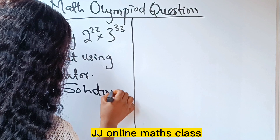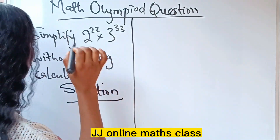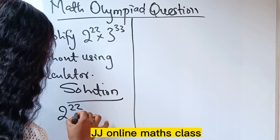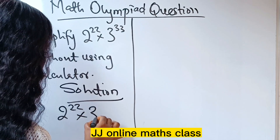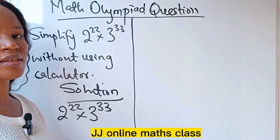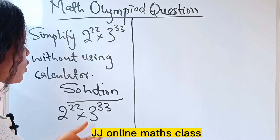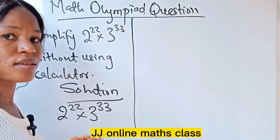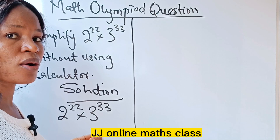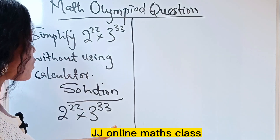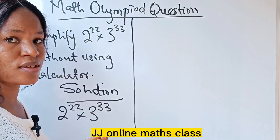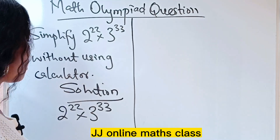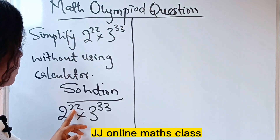We are to simplify 2 raised to the power of 22 times 3 raised to the power of 33. We are going to make use of indices — that is, exponential rules — to derive the solution.